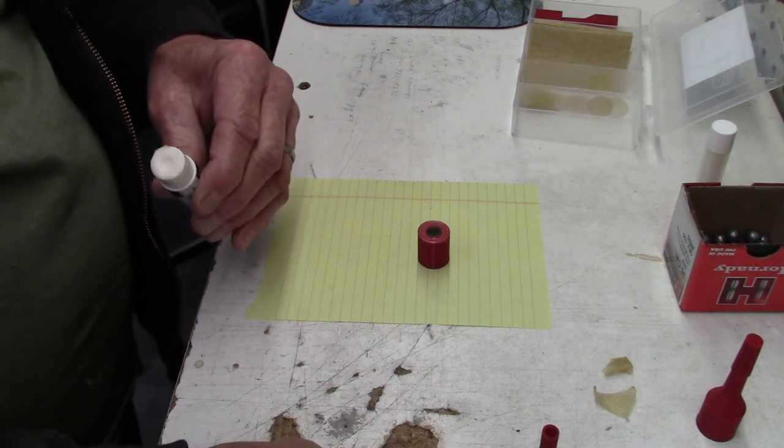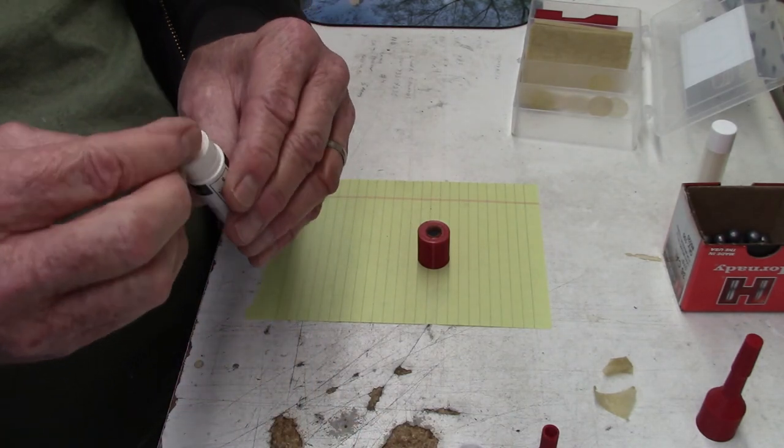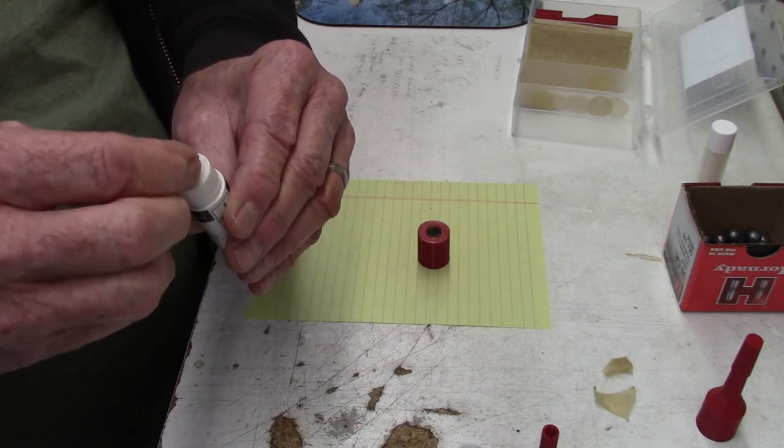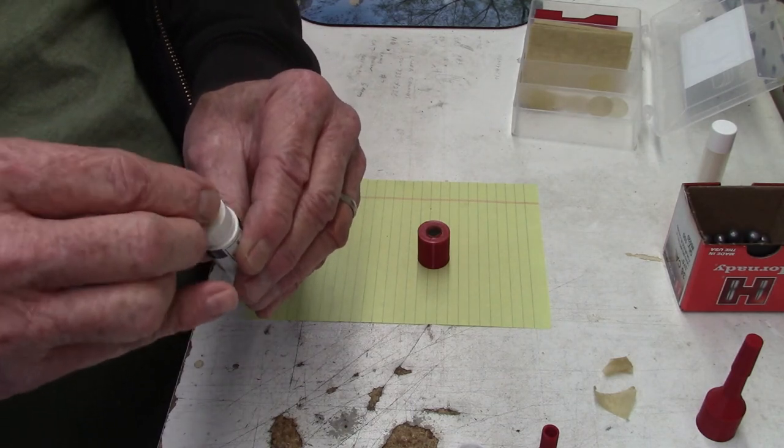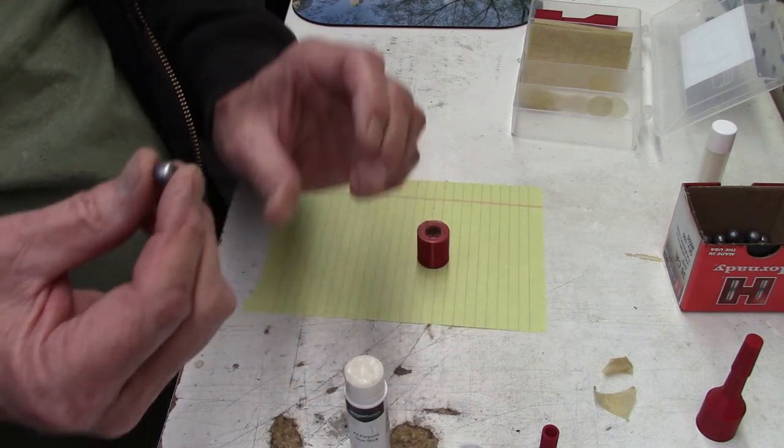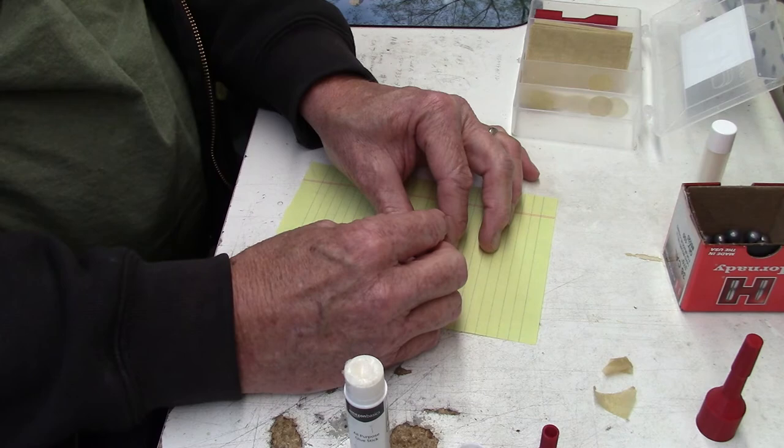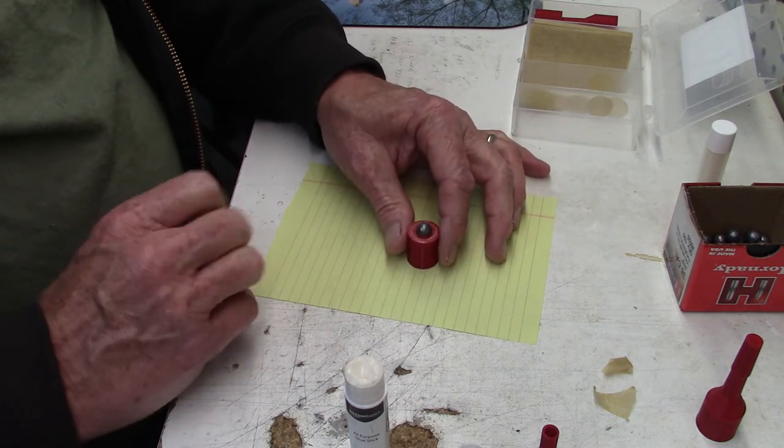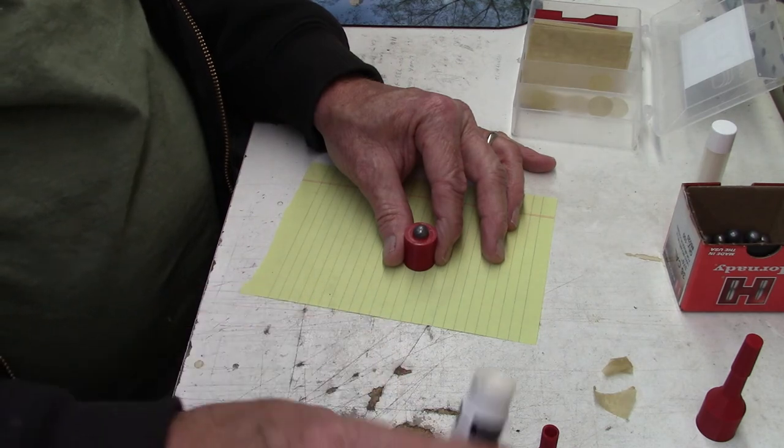I take my glue stick, and he shows the same thing on his videos. Just roll it around on that glue. Don't be afraid to get some on there. Then what I do is I drop the ball in there. Get the glue because it'll start pulling the ball back off with it.